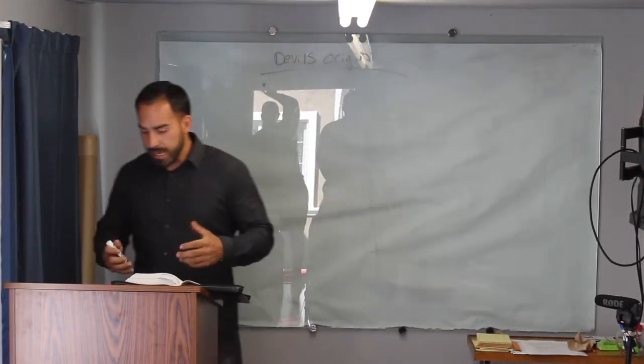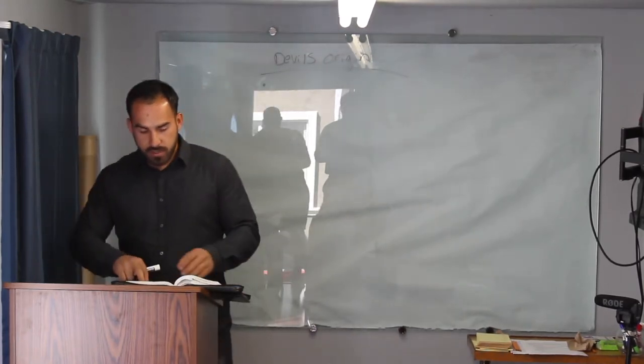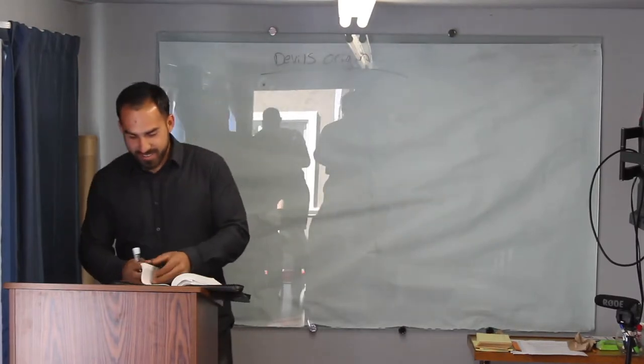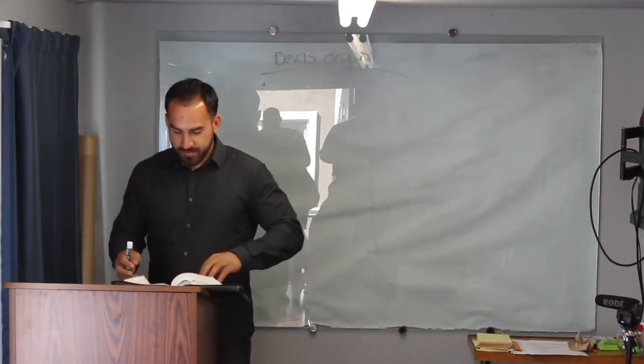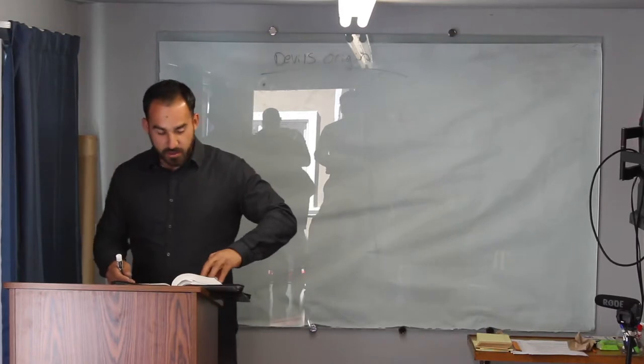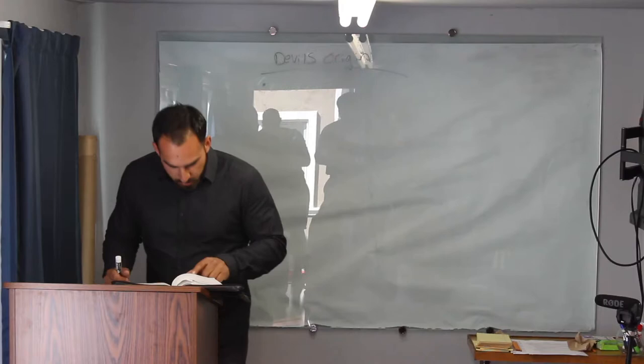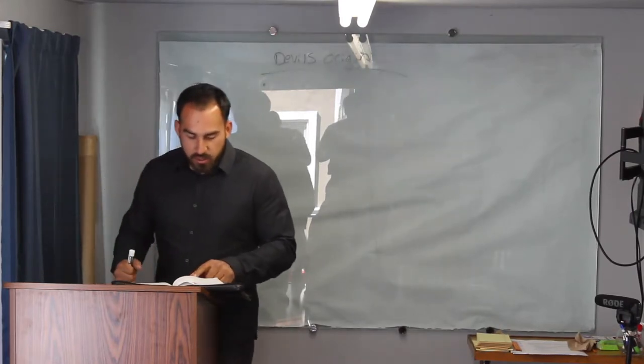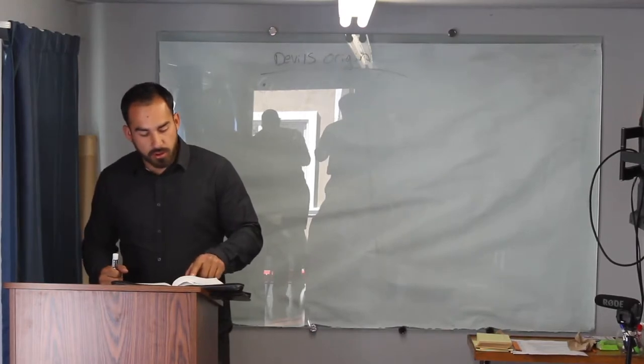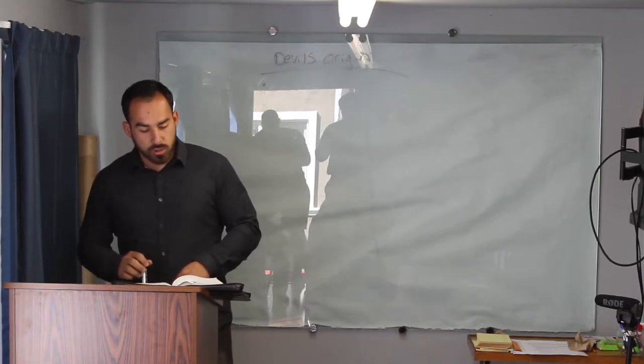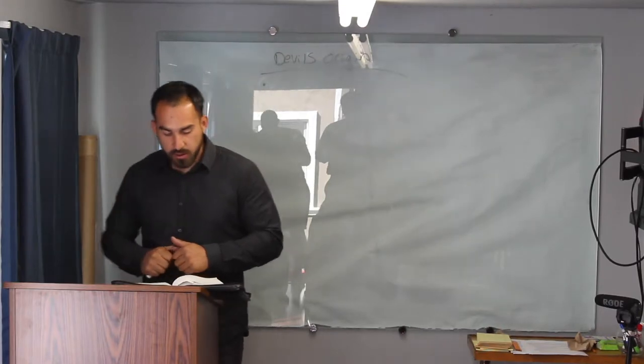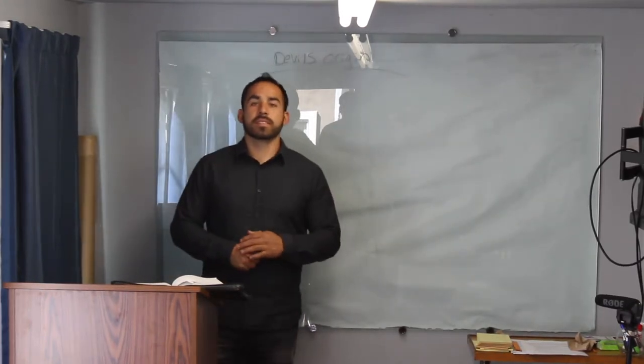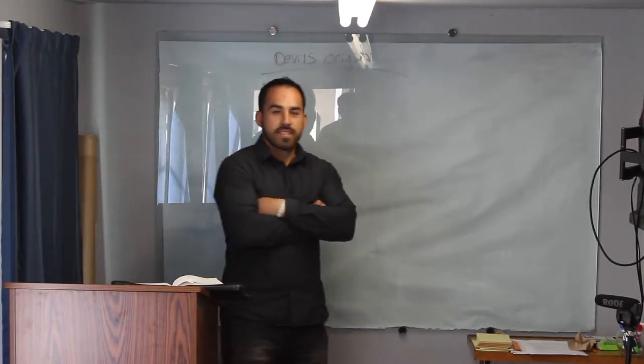John 8:44. For you are the children of your father, the devil, and you love to do evil things. He was a murderer from the beginning, and he always hated the truth because there is no truth in him. When he lies, it is consistent with his character, for he is a liar and the father of lies.